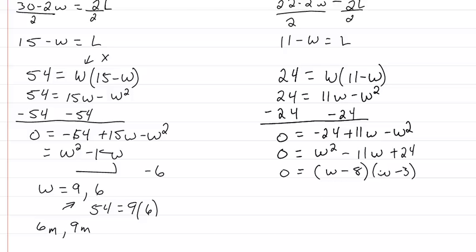So factors of 24 that add up to be 11. We're going to get 8 and 3. Okay, so we know area is equal to 24. Well, 24 equals 8 times 3. So that means that our, in this case, that 3 inches is our width and our length would be 8 inches.